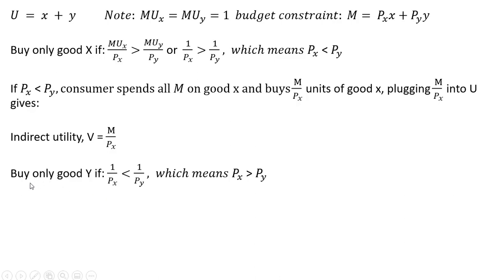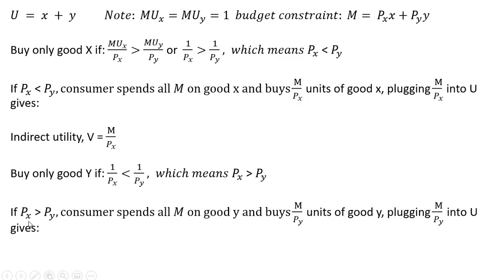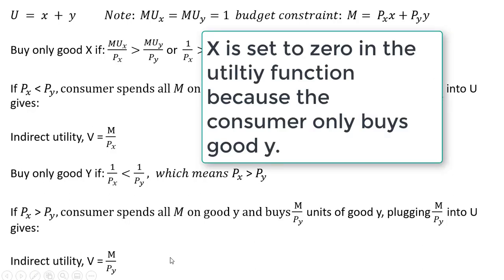Now let's assume that the consumer is only going to buy good y. If the consumer is only going to buy good y, it implies that the marginal utility per dollar of good y exceeds the marginal utility per dollar of good x — or in other words, this condition holds, which means the price of good y is less than the price of good x. So if the price of good y is less than the price of good x, the consumer spends all her income on good y and will be able to afford m divided by the price of good y units of good y. Plugging this result into the utility function, where we have y we replace it with m divided by the price of good y, gives us this indirect utility.